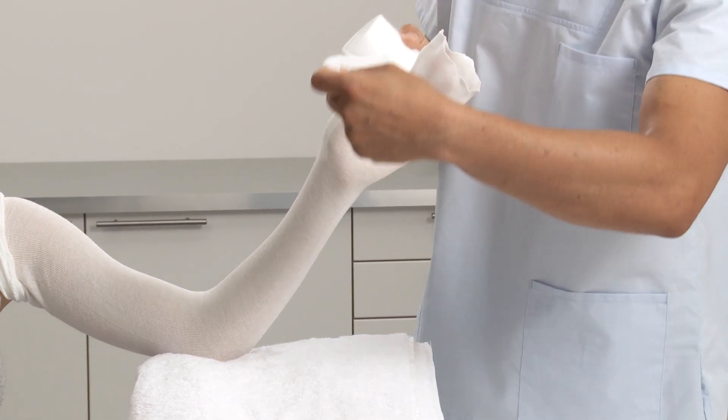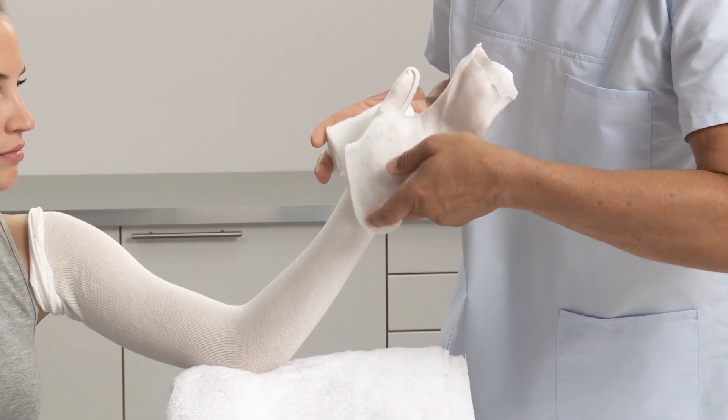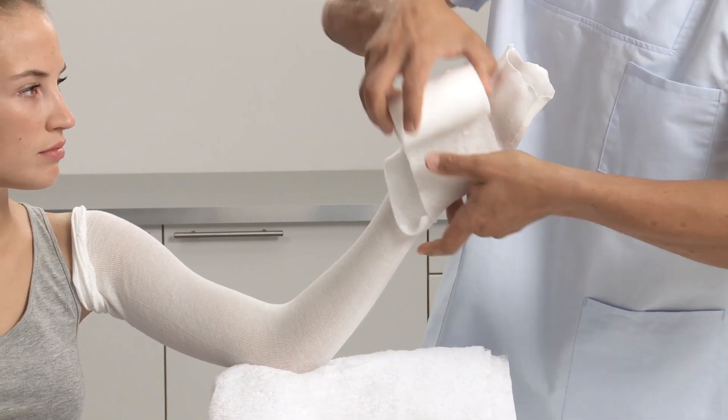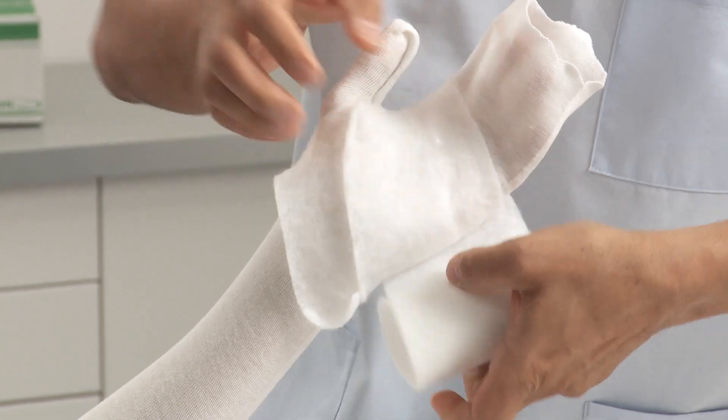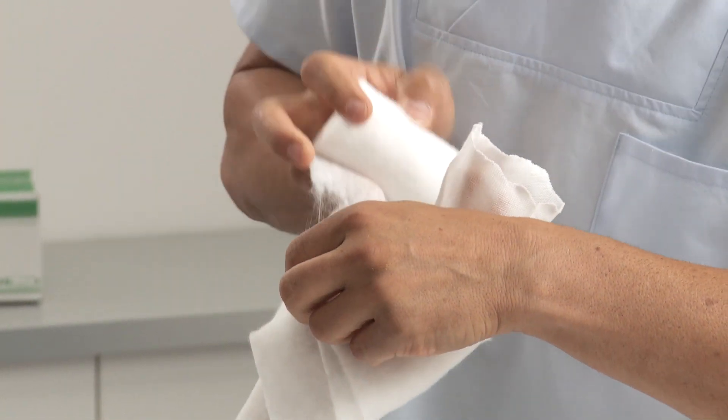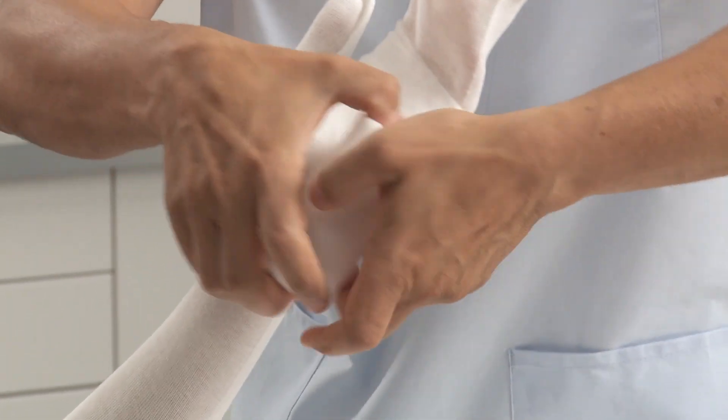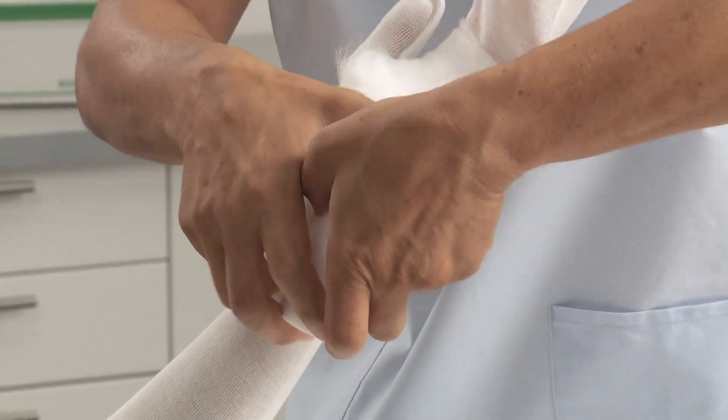Apply padding to the limb. Make sure you have enough to protect bony prominences. Cut a small hole into the padding roll and slide over the thumb. Pass the padding twice through the web space.